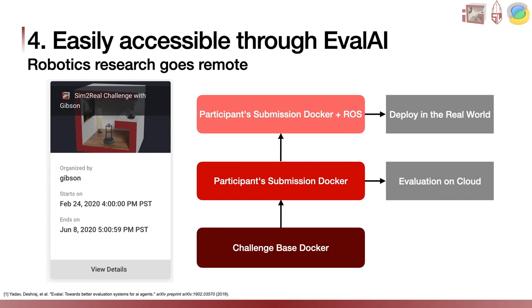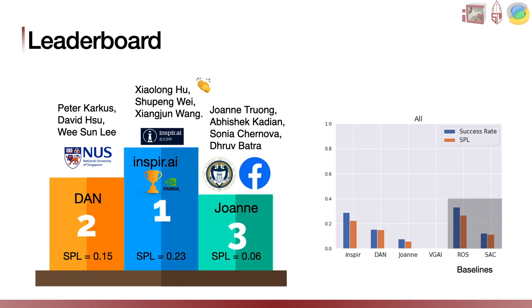Through this challenge, we are taking one step forward in the direction of making robotics research go remote. Now, Roberto is going to talk about the results, analysis, and conclusions. We are glad to officially announce the ranking of the first Sim2Real Visual Navigation Challenge with iGibson. The winner is team Inspire.ai, with Shaolong, Xiaoping, and Shanjun. Second entry is the Dan team from the National University of Singapore. Third entry is team Joanne from Georgia Tech and Facebook. Fourth entry is team VGAI from TCS Research. We had multiple participants in simulation, but only these four passed to the real-world phase. Congratulations to all participants, and especially to team Inspire.ai, which also receives a state-of-the-art GPU card from our sponsor NVIDIA.